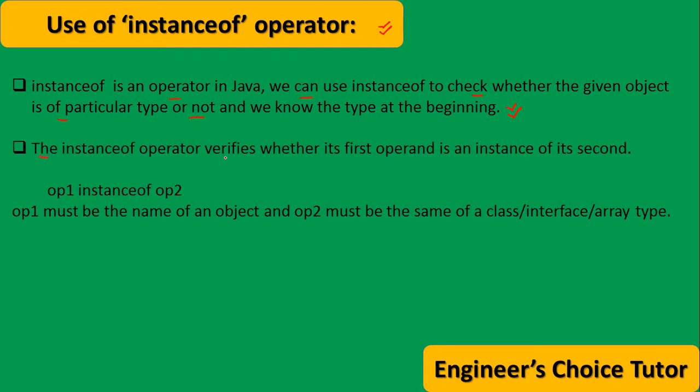The instanceof operator verifies whether its first operand is an instance of its second or not. The syntax is op1, that is operand1, instanceof operand2.